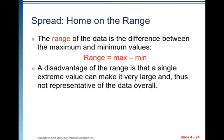Spread — home on the range. The range of the data is the difference between the maximum and minimum values: range = max minus min. A disadvantage of the range is that a single extreme value can make it very large, thus not representative of the data overall.